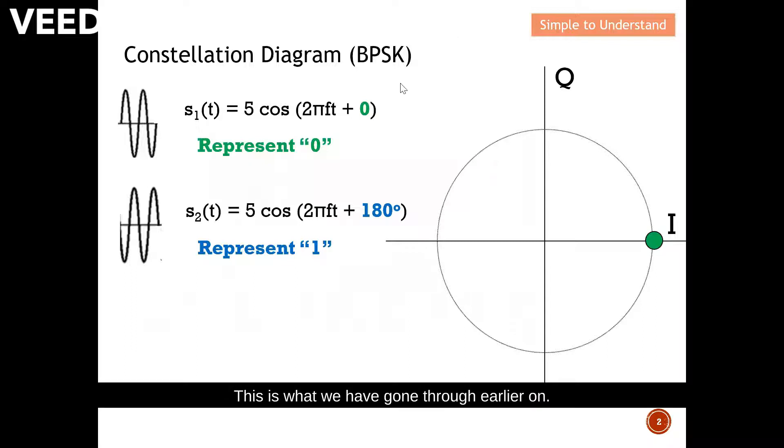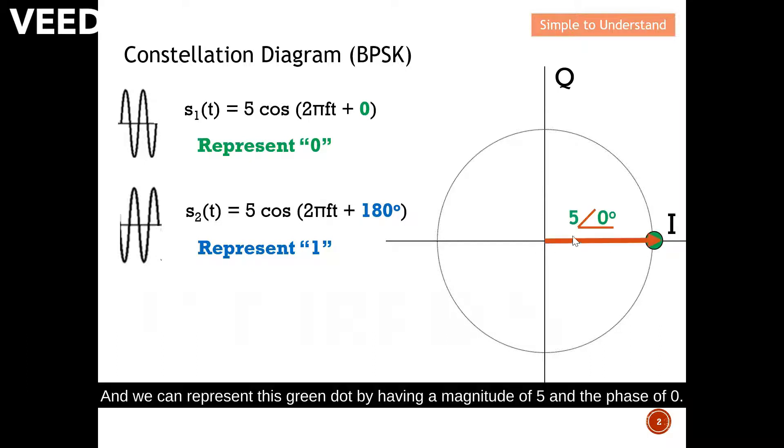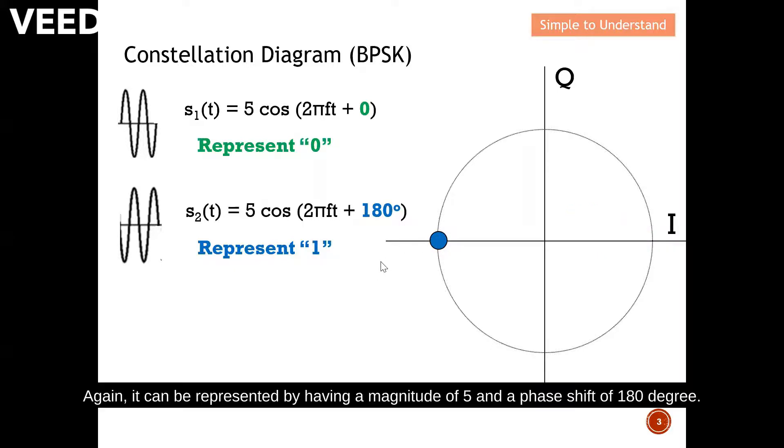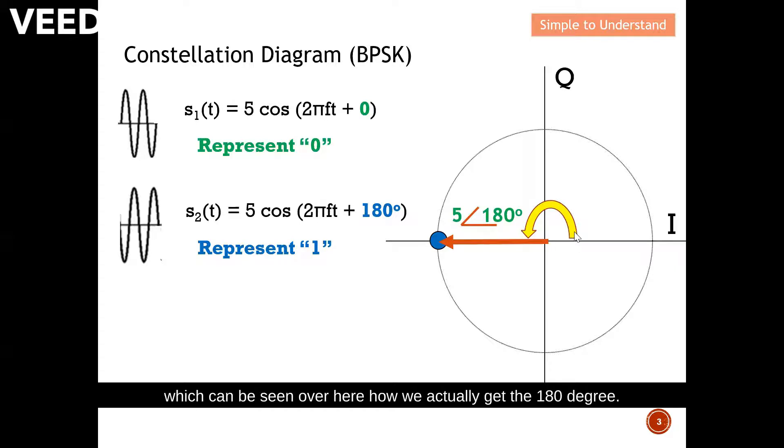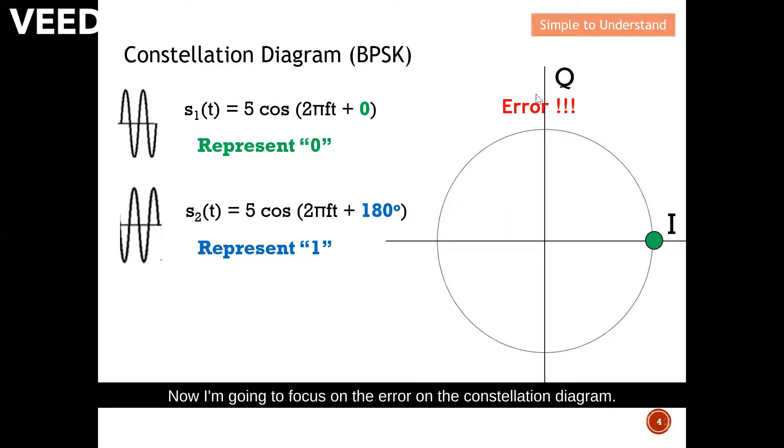This is what we have gone through earlier on. Here we have discussed how we can represent, for example, a BPSK in a constellation diagram. For example, this is a signal zero, which can be represented by this green dot here, and we can represent this green dot by having a magnitude of five and a phase of zero. And when the digital signal is one, I can represent them in the blue dot here. Again, it can be represented by having a magnitude of five and a phase shift of 180 degrees, which can be seen over here. How we actually get the 180 degrees, now I'm going to focus on the error on the constellation diagram.